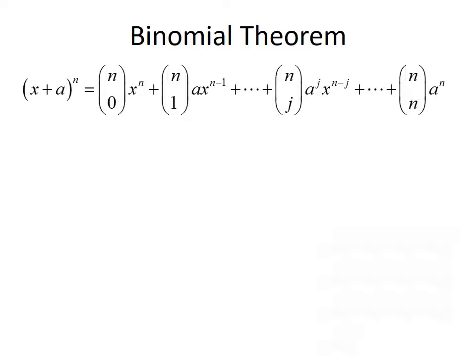Now that we've talked about n choose j, we can talk about the binomial theorem. The binomial theorem says x plus a raised to the nth power equals n choose 0 times x to the n, plus n choose 1 times a times x to the n minus 1, plus n choose 2 times a squared times x to the n minus 2, and so on. For each additional term, j increases by 1, the power of a increases by 1, and the power of x decreases by 1.